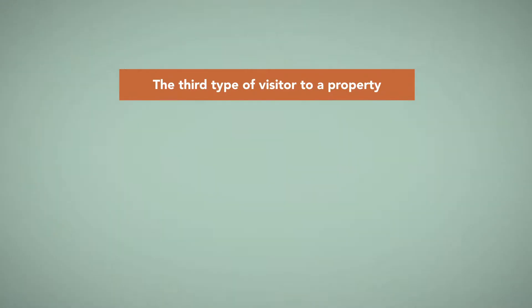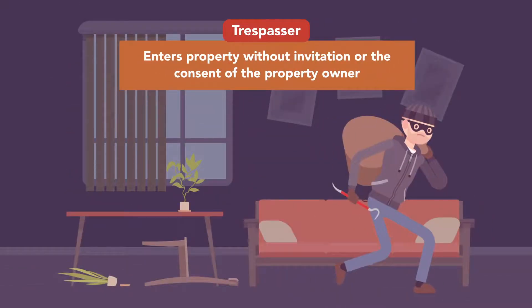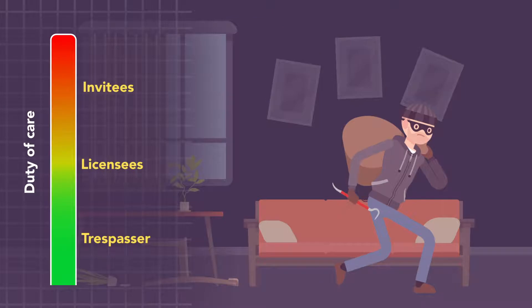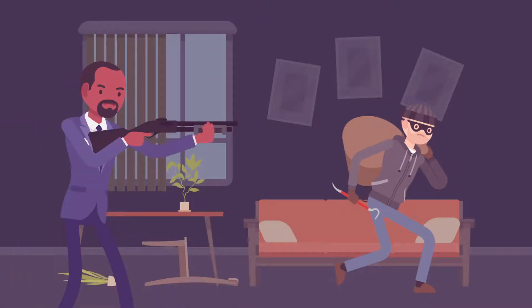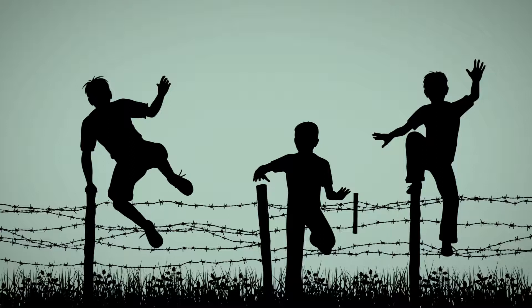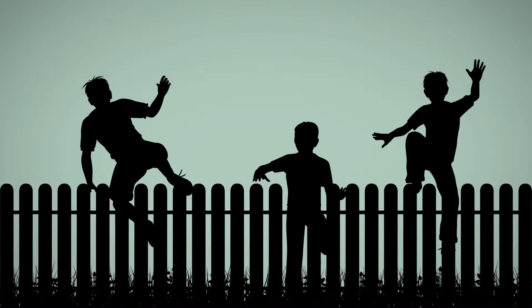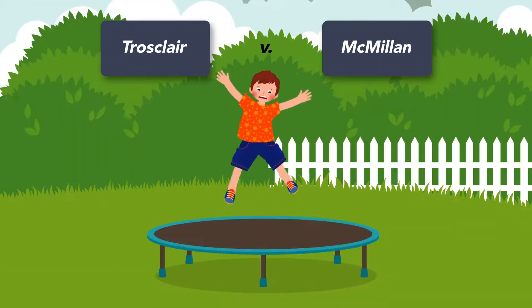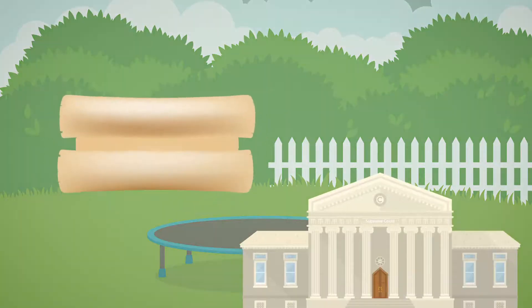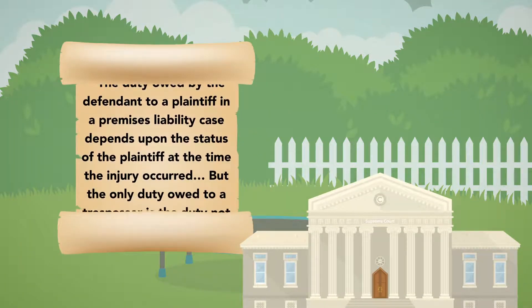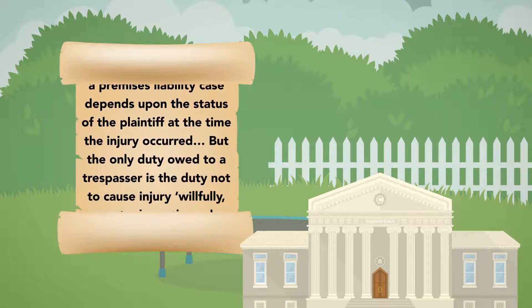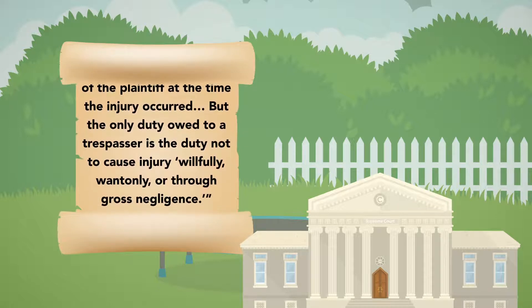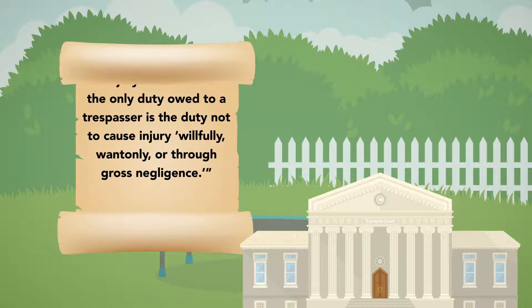The third type of visitor to a property is the trespasser, who enters property without invitation or the consent of the property owner. They are owed the least amount of care. In most states, an owner only owes a duty not to intentionally injure a trespasser or act with gross negligence. Still, if the owner knows that children are likely to be attracted to something on the property, the owner has the responsibility to take reasonable steps to keep children out or to make the premises safe. This doctrine is known as the Attractive Nuisance Rule. In Trosclare v. Macmillan, a child was injured after entering a yard to jump on a trampoline without the owner's permission. The court stated that the only duty owed to a trespasser is the duty not to cause injury willfully, wantonly, or through gross negligence.